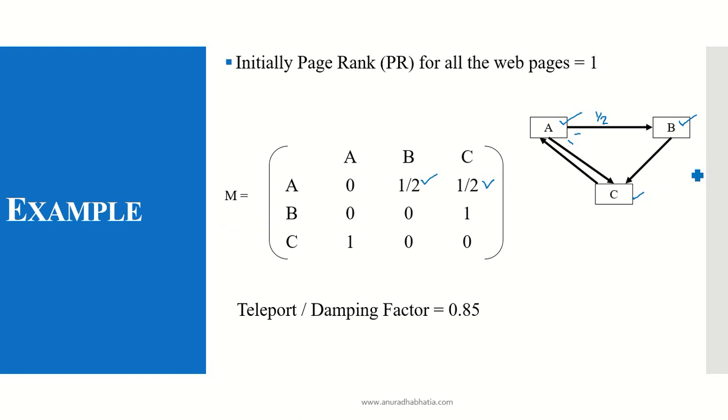Now, from B, the outlink is only one. So the value will be one. So B to C, I have a value one. Again from C, I have only one outlink. So the value here will be one and C to A, the value is one. Teleport and damping factor given will be 0.85.